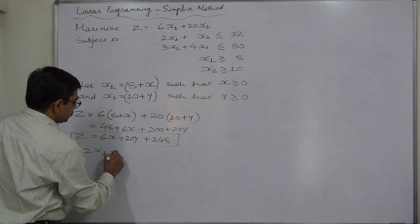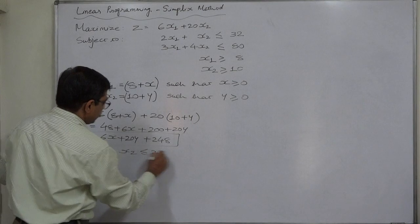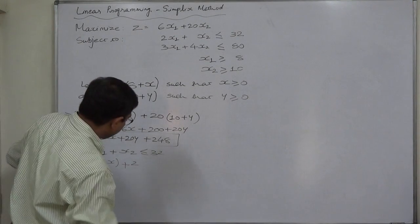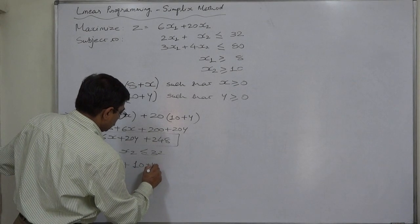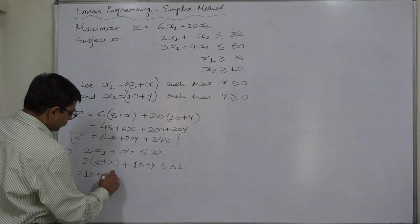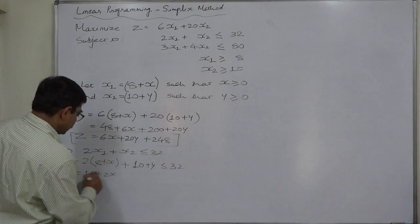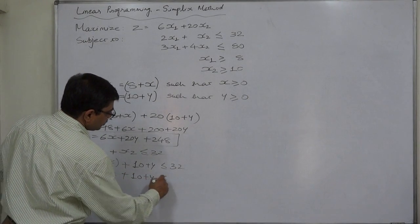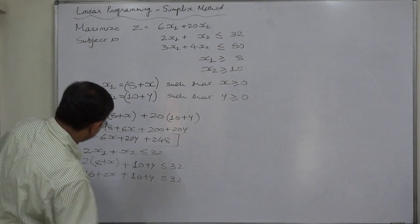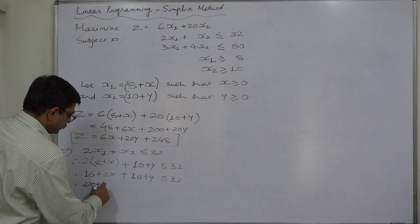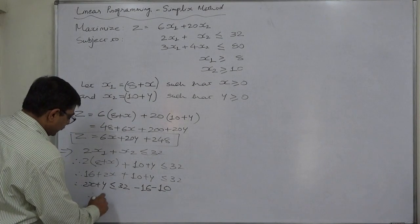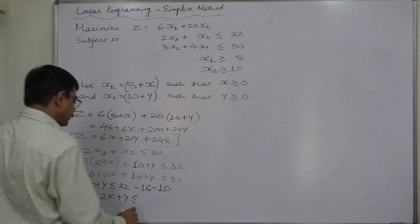For the first constraint, 2x₁ + x₂ ≤ 32 becomes 2(8 + x) + (10 + y) ≤ 32. Simplifying: 16 + 2x + 10 + y ≤ 32, which gives 2x + y ≤ 32 − 16 − 10. Ultimately the first constraint becomes 2x + y ≤ 6.